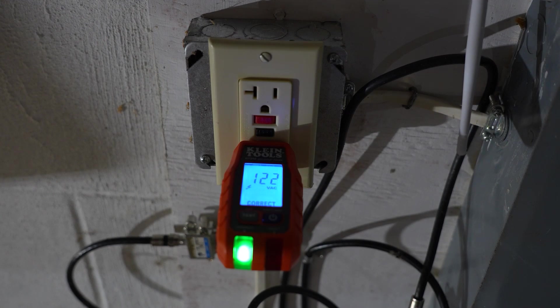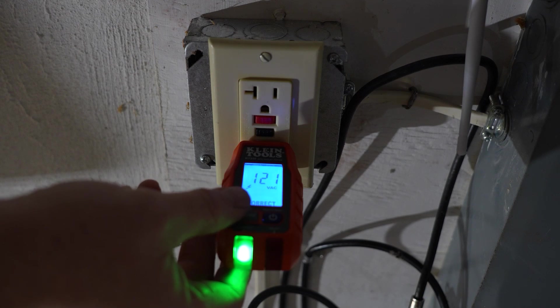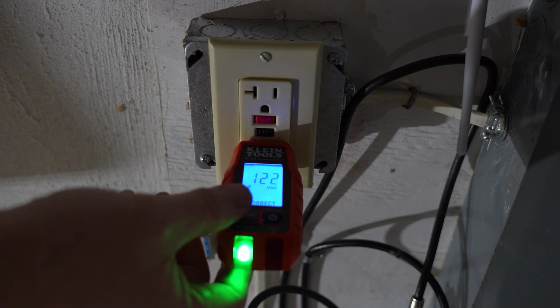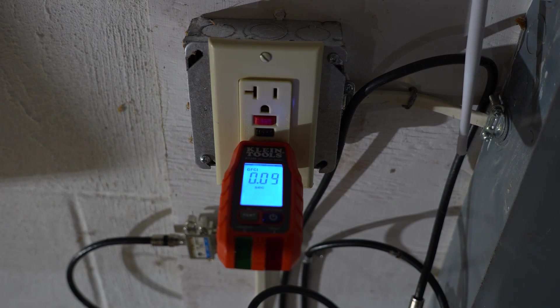It can also test the GFCI outlets just like any other tester. However this one will tell you just how long it took for that outlet to trip. To test the outlet you just press the test button and you can see on the screen it took 0.09 seconds for this particular outlet to trip.